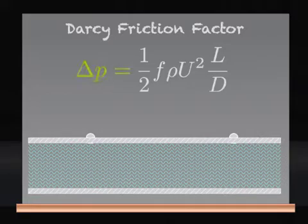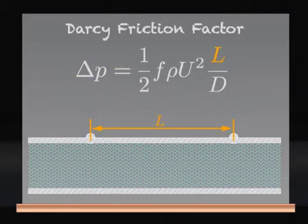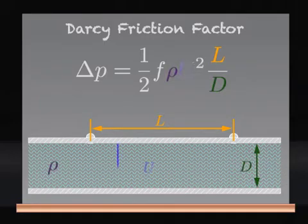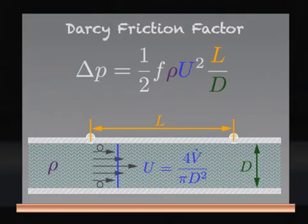In this equation, delta p is the pressure loss over a length L for a channel with a circular cross section and an internal diameter D. Rho is the fluid density, and U is the average flow velocity, defined as the volume flow rate divided by the cross-sectional area of the channel.